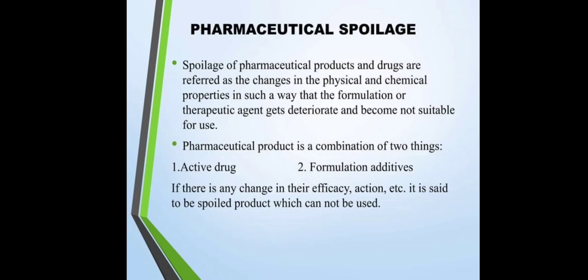Pharmaceutical spoilage is the spoilage of pharmaceutical products and drugs, referred to as the change in physical and chemical properties in such a way that the formulation or therapeutic agents get deteriorated and become not suitable for use. Pharmaceutical products are a combination of two things: an active drug and formulation additives. If there is any change in their efficacy or action, it is said to be a spoiled product which cannot be used.